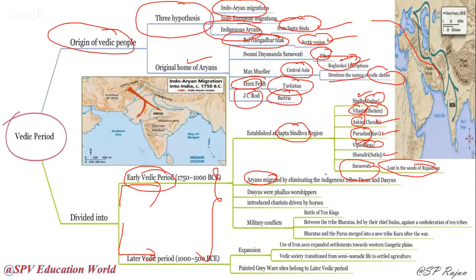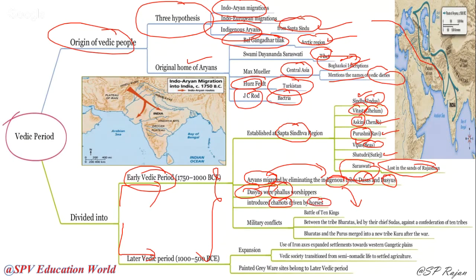Aryans are thought to have migrated from different places, causing indigenous tribes called Dasas or Dasyus to move mostly to South India. Dasyus were phallus worshippers or Shiva followers. Aryans introduced chariots and horses into India — this can be asked as a question: who introduced chariots and horses to India? It is clearly the Aryans.